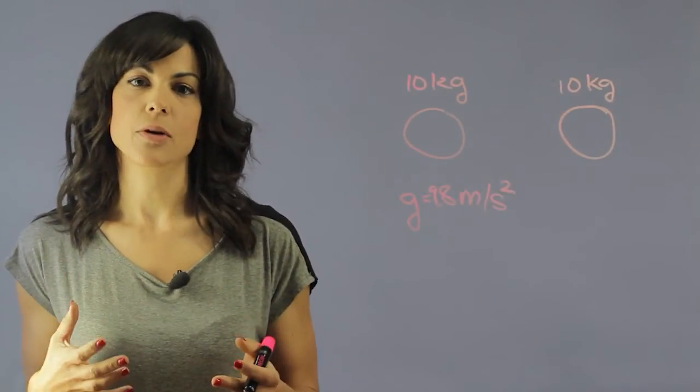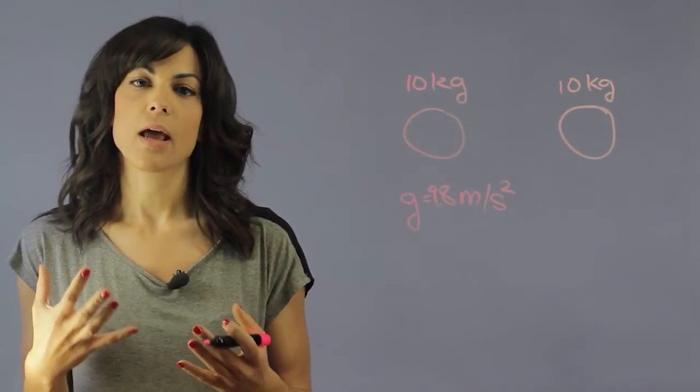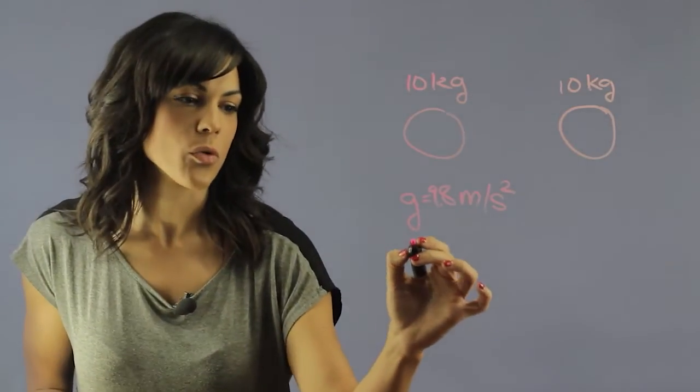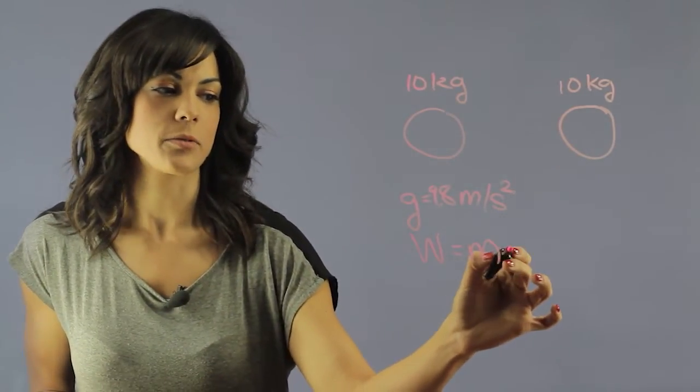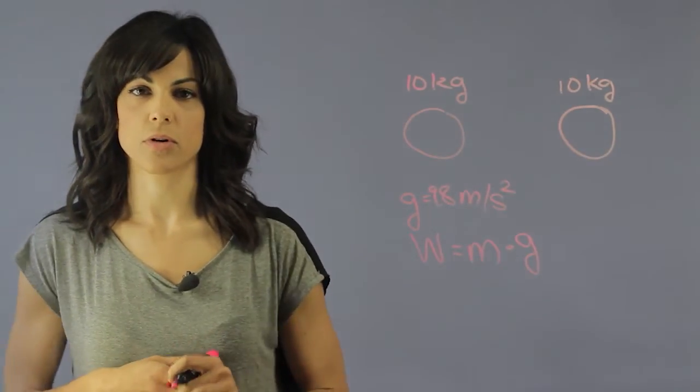Now, how do we determine, using this gravitational strength, how heavy are you on Earth? So the weight is the mass of the object times this gravitational strength. And this is for Earth.